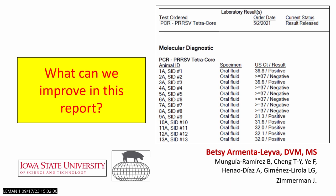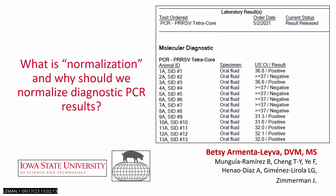This is your standard PCR lab report. You have your sample ID, sample type, and then your CT results. Today we'll be talking about normalization and why we should be normalizing our PCR results.